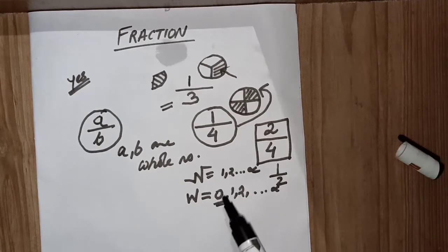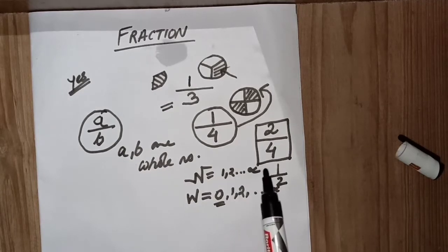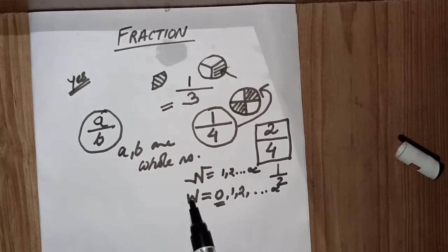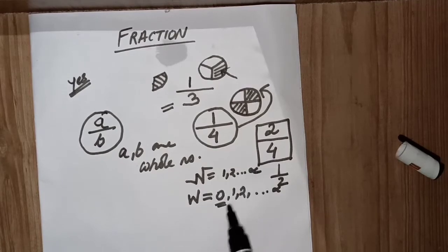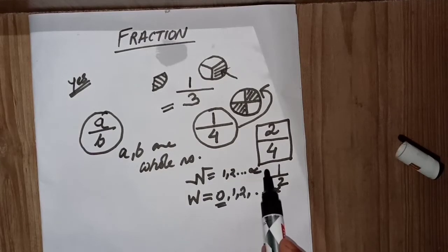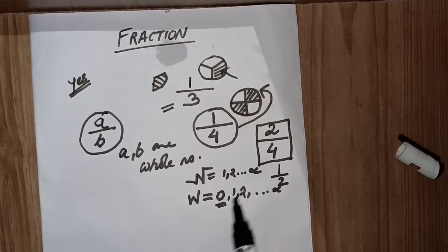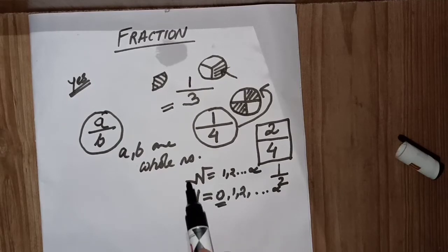All natural numbers are whole numbers, but all whole numbers are not natural numbers. Natural numbers start from one, two, three, four up to positive infinity. The whole number line starts from zero. Since zero is missing in natural numbers, not all whole numbers are present in the natural number line. All natural numbers from one onward are present in the whole number line, but zero is not in the natural numbers.